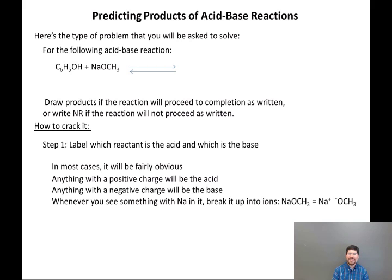And then the third rule of thumb is, anytime you see Na, it's always going to be Na plus, and it's going to be a spectator ion. So when you see something with Na in it, like NaOCH3, break that up into ions. So you don't see anything with a charge on it in the two reactants that are given to you. But if you take the NaOCH3, break it up into Na plus, OCH3 minus, recognizing that Na plus is a spectator ion, you now suddenly see that OCH3 minus is actually the active reactant.